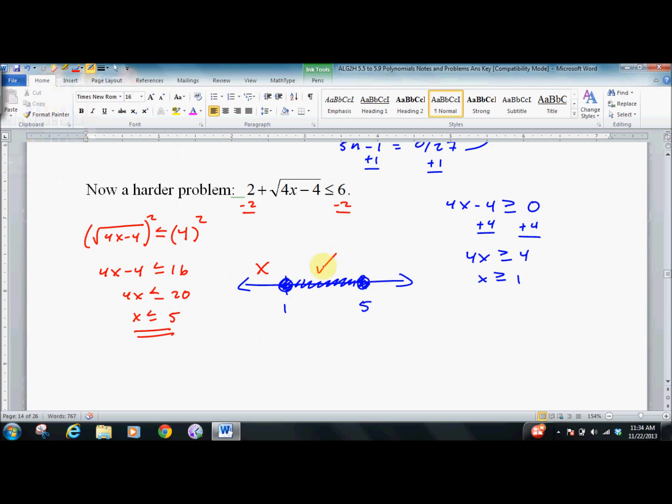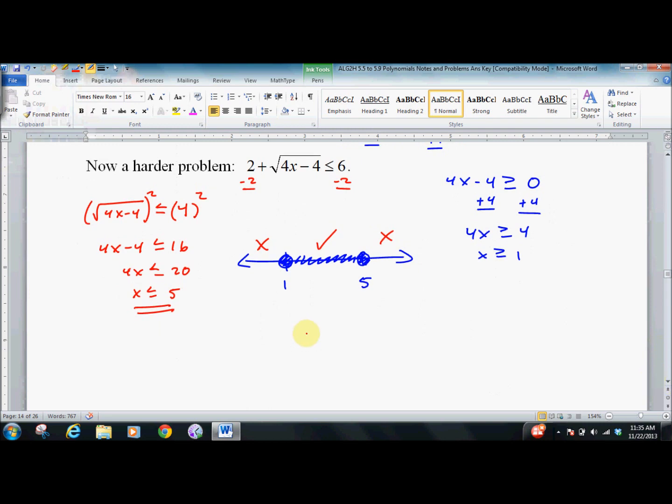Let's try an answer up here. It's 6. 4 times 6. Actually, let's try 10 up here. 4 times 10 is 40. Minus 4 is 36. Square root of 36. 2 plus 6 is not less than or equal to 6. Whoops.